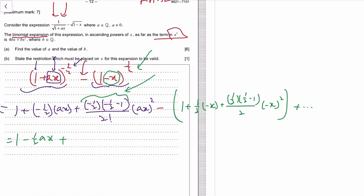What is that? Negative half times negative half minus 1 is 3 over 2, the negative cancels out, so it's 3 over 4 divided by 2, so 3 over 8 a squared x squared.